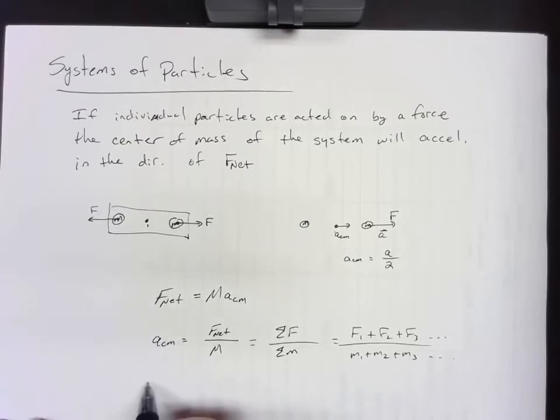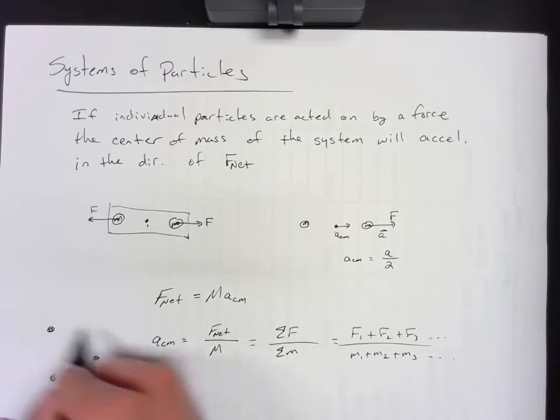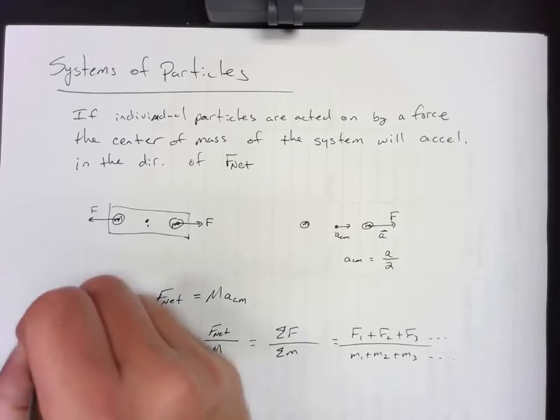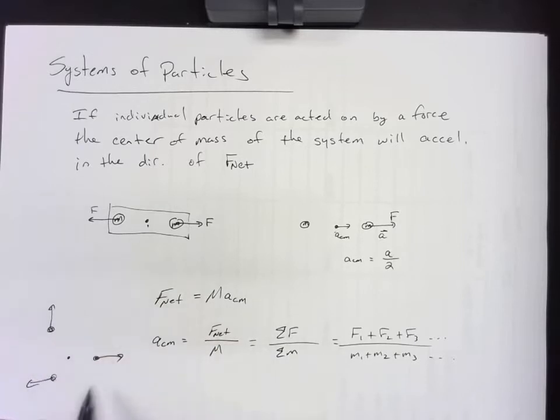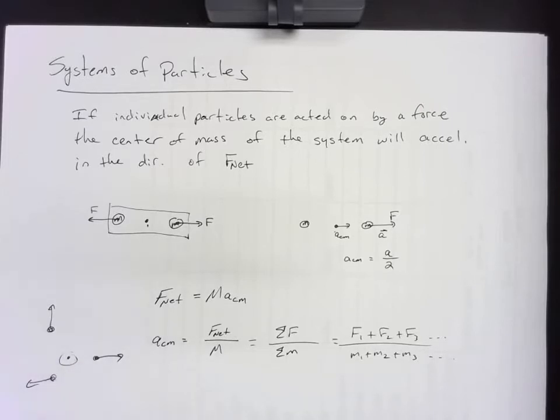So you could have three particles in space. The center of mass would be shifted towards there. If there's a force this way, a force this way, and a force this way, all three of these particles will accelerate. Based upon the vector addition of all those forces, this would then accelerate in the direction of the net force. And that's the same way that we would add three forces acting at the same point.